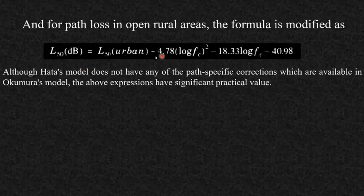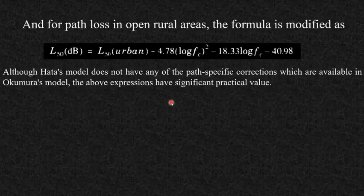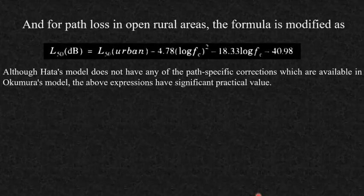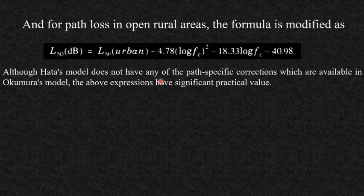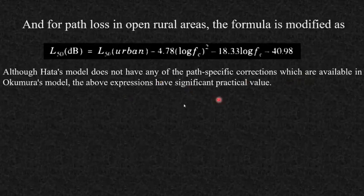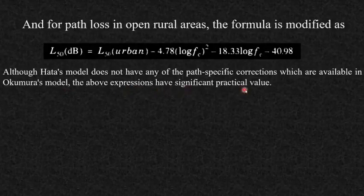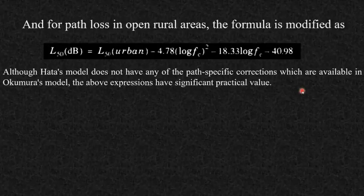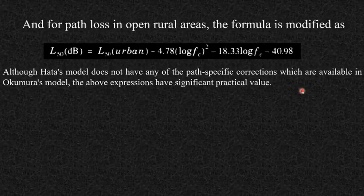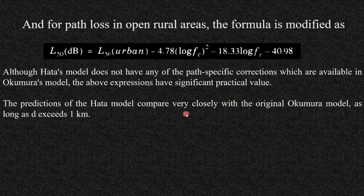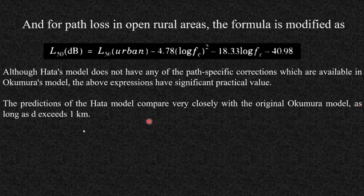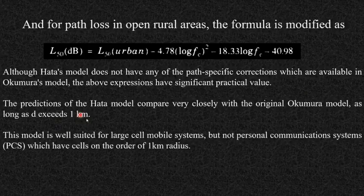To summarize: the formula changes for rural and suburban areas, while for city types, only the correction factor A(Hre) changes. Although the Hata model does not have path-specific corrections available in the Okumura model, the expressions have significant practical value. Predictions compare closely with the original Okumura model for distances greater than 1 kilometer. This model is well-suited for large cell mobile systems but not for Personal Communication Systems (PCS).